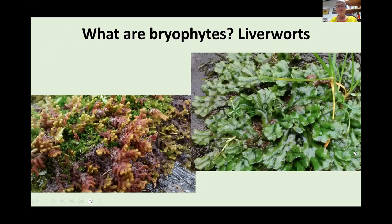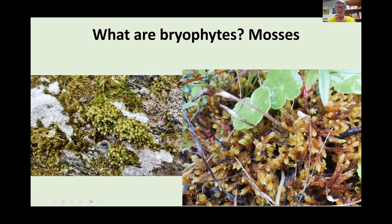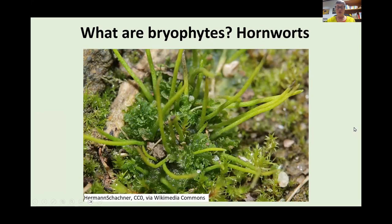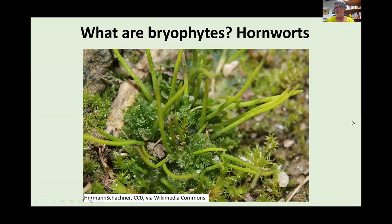Now that we know what isn't a bryophyte, let's find out more about actual bryophytes. They are divided into three major groups: liverworts — with two example types shown here — mosses, and hornworts. There are only four species of hornworts in the UK and they're not very easy to see. They are very similar to liverworts, but the main difference between liverworts and hornworts is in their reproductive structures, which we'll cover in more detail later.